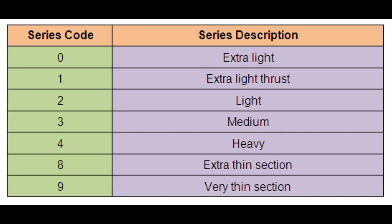Now we can see about bearing series and their code. The second digit of a bearing part number indicates the bearing series. The series of a bearing denotes the toughness of the bearing. Thus, in case of bearing 6305ZZ, the second digit 3 means the bearing is of medium toughness.